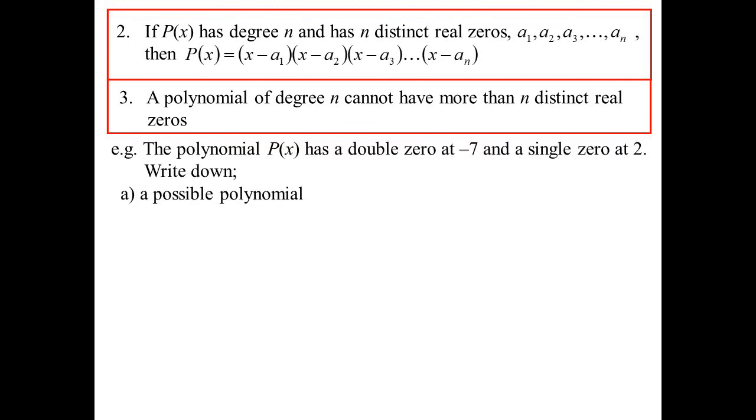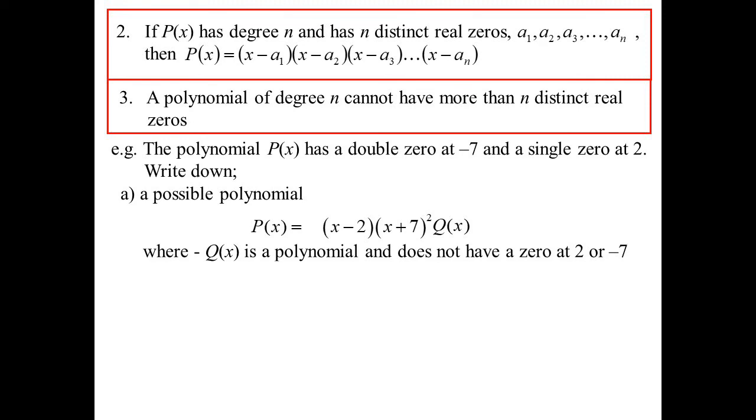Okay, let's have a look at this. We have a polynomial. We know it has a double zero. It just means that zero appears twice, so when you factorise it, you'd have that linear factor squared. And a single zero at 2, write down a possible polynomial. And by a possible polynomial, what they really mean is one that would generalise it and cover every possibility. I know I've got these two factors, x minus 2 and x plus 7 squared. But, of course, it could be times another polynomial. So long as that polynomial doesn't have a zero at 2 or negative 7.